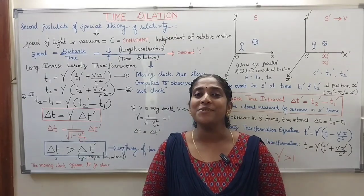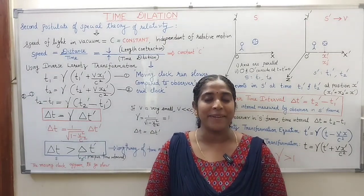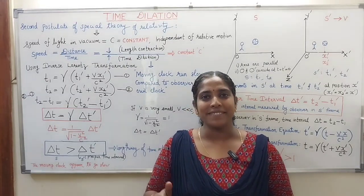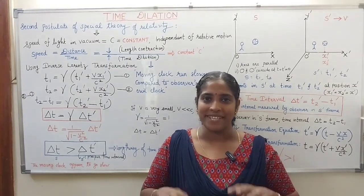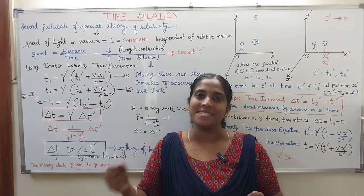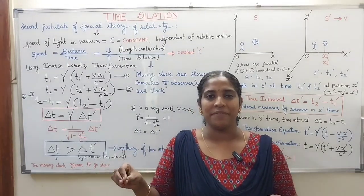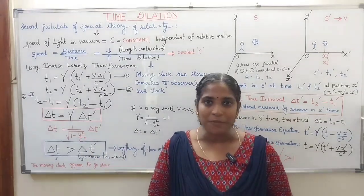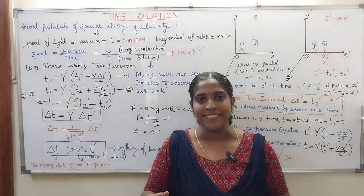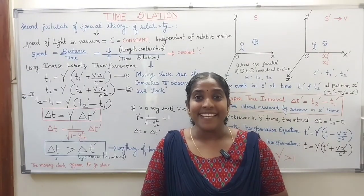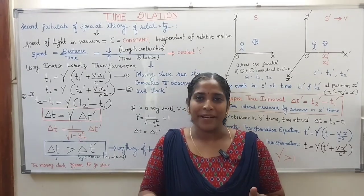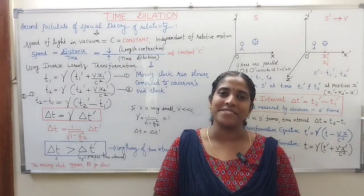This time dilation effect leads to a famous paradox — the twin paradox. Imagine two twin brothers, Joshi and Jomi, celebrating their 20th birthday on Earth. After the celebration, the adventurous Jomi decides on a space trip, traveling in a spaceship at a speed comparable to light. He takes one year for his trip and returns to celebrate his 21st birthday, only to find his twin brother Joshi very aged. You can search for further animations online.